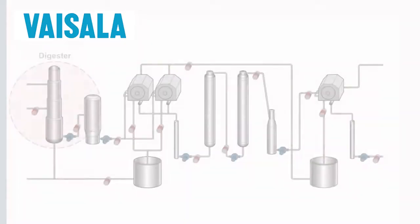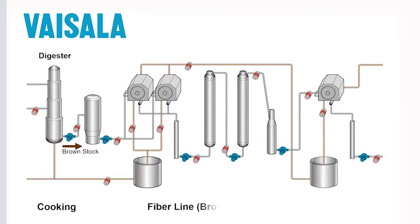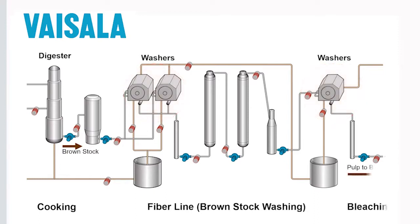This process starts in the digester where pulping takes place and the brown stock is produced. Following the cooking, the brown stock moves on to the fiber line where it passes through a series of washers to remove as much dissolved solids from the pulp as possible before it goes to the bleaching plant.